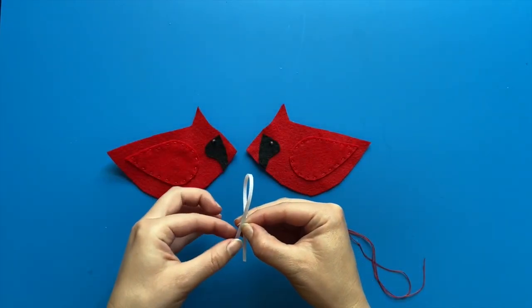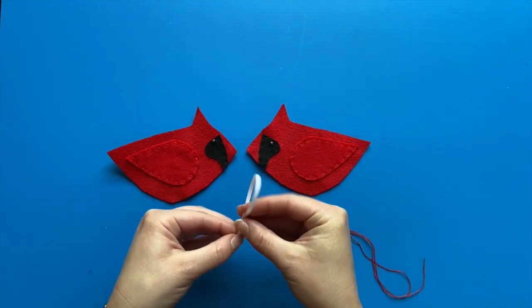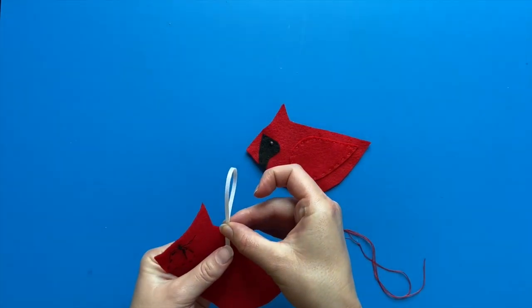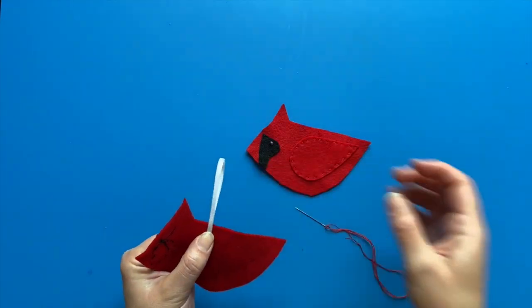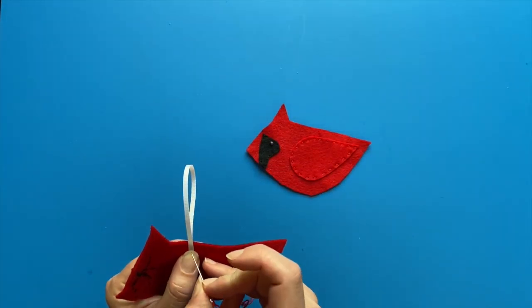If you have a piece of ribbon, cut about four to five inches and fold it in half. With the thread the same color as the body, stitch it to the back side of one half of the body, like this.